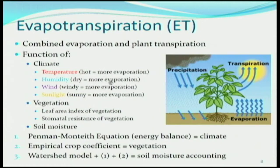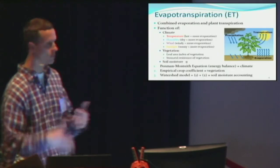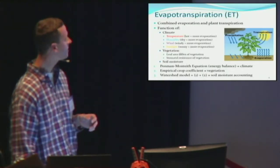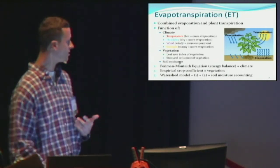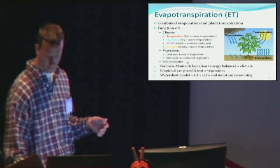Just briefly on evapotranspiration: plants pull water out of the root system and transpire it into the air, and there's also natural evaporation from the soil surface — at large scale you can't really differentiate these. It depends on temperature, humidity, wind, and sunlight. There's been a lot of research to predict evaporation demand from the atmosphere using a nice equation, with empirical adjustments for different kinds of vegetation. The soil moisture is continuously changing, so you need a watershed model to track it.